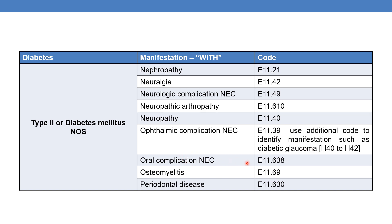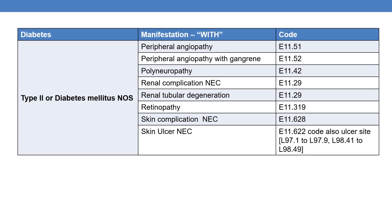For oral complication NEC, the code is E11.638. For diabetes mellitus with osteomyelitis, the code is E11.69. For diabetes mellitus with periodontal disease, the code is E11.630. For diabetes mellitus with peripheral angiopathy, the code is E11.51. For peripheral angiopathy with gangrene, the code is E11.52.